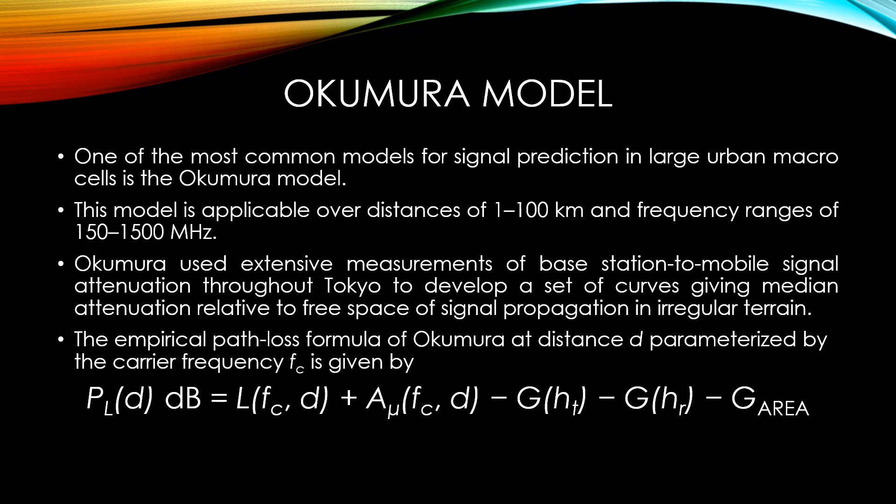Okumura model. One of the most common models for signal prediction in large urban macrocells is the Okumura model. This model is applicable over distances of 1 to 100 km and frequency ranges of 150 to 1500 MHz. Okumura used extensive measurements of base station to mobile signal attenuation throughout Tokyo to develop a set of curves giving median attenuation relative to free space of signal propagation in irregular terrain. The empirical path loss formula of Okumura at a distance d parameterized by the carrier frequency fc is given by PL(d) dB equal to L(fc, d) plus Amu(fc, d) minus G(ht) minus G(hr) minus Garea.